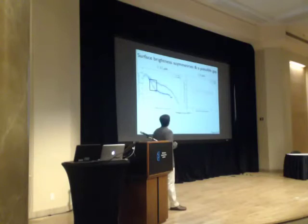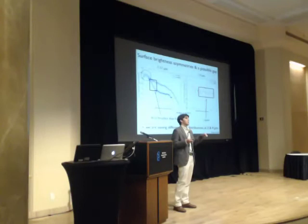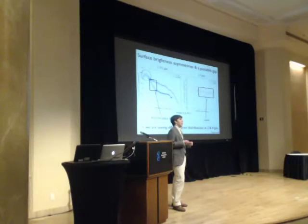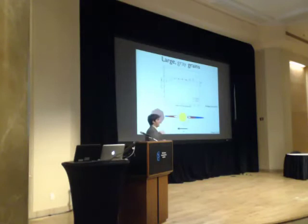We're also seeing surface brightness asymmetries and evidence for a possible gap. In the K band image there's a surface brightness asymmetry between the two sides of the disk, but at L prime (3.8 microns) you don't see that — meaning we're seeing two different grain distributions between 2 and 4 microns. For the gap: in an edge-on disk, surface brightness should keep rising closer to the star, but it drops, and there's SED evidence suggesting a gap at 45 AU.